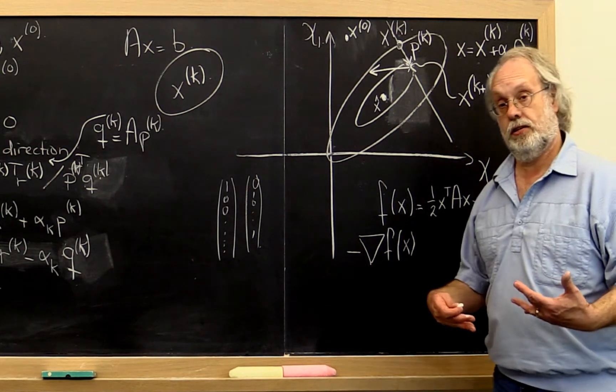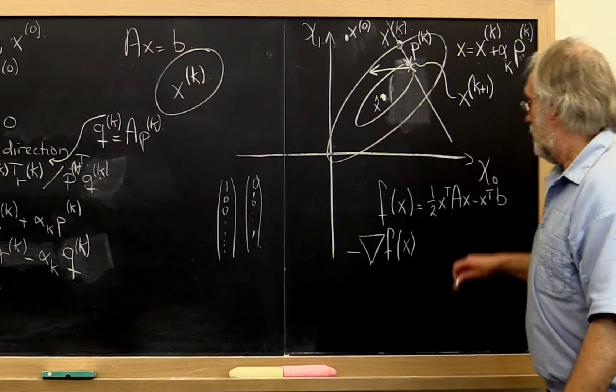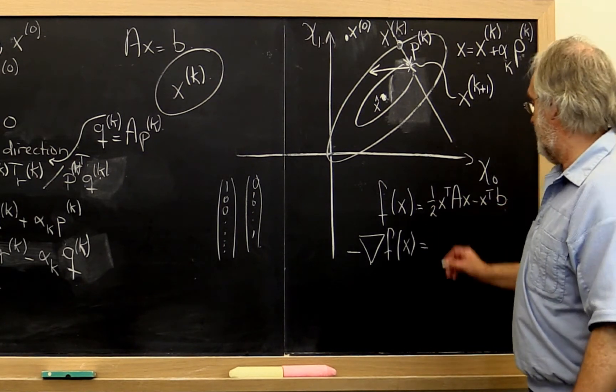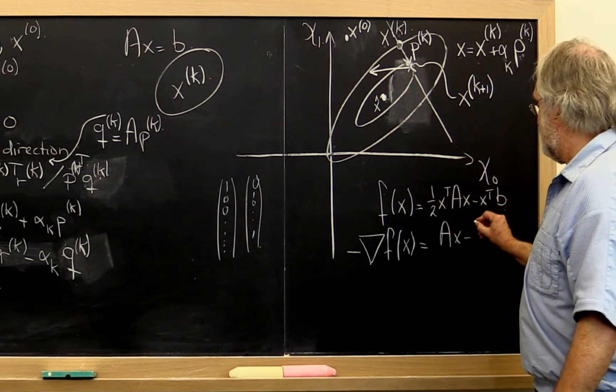And we reasoned in the opener for this week that its gradient was given by Ax minus b.